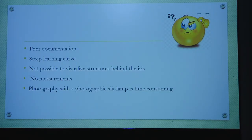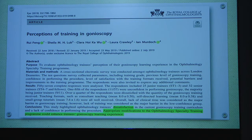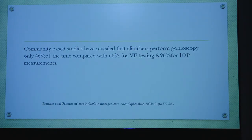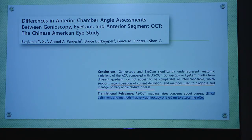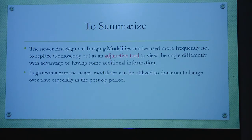The limitations of gonioscopy include poor documentation, a steep learning curve, and no quantitative measurements. Studies have shown there is a perception that an upgradation of gonioscopy is required — even residents gave that feedback. Community-based studies suggest a gradual phasing off of gonioscopy use. To conclude: we are open to newer modalities coming into the picture, but we need to redefine and reconsider the current definitions and methods used to diagnose and manage primary angle closure disease. All these newer modalities can be used as adjunctive tools.